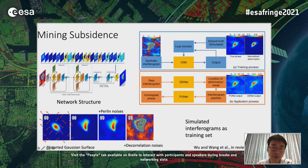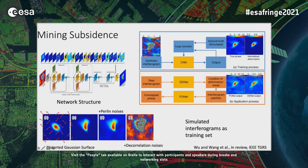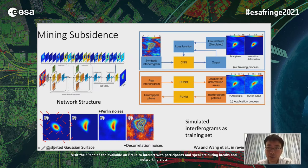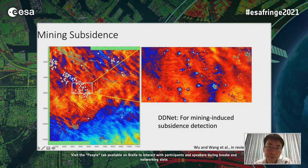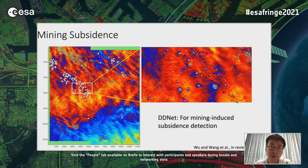We propose a deep learning network to solve this unwrapping problem. We set up our training dataset using a distorted Gaussian surface to simulate mining-induced local deformation, then added tropospheric noise to simulate atmospheric delays and decorrelation noise, forming more than 10,000 simulated interferograms as a training set. With this training set, we have true phase values paired with simulated interferograms. We train our network to learn fringe patterns, with one output being the unwrapped phase and another the probability of local deformation — called DDNet.